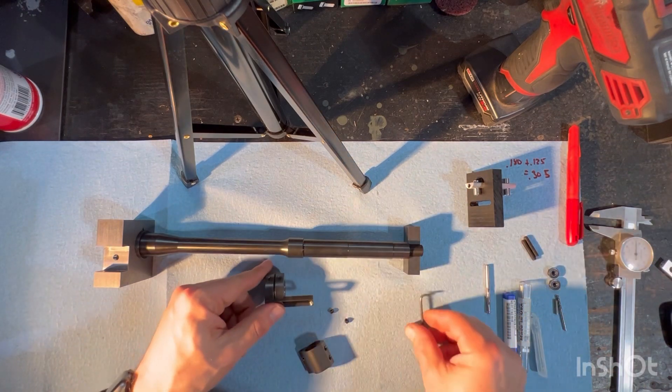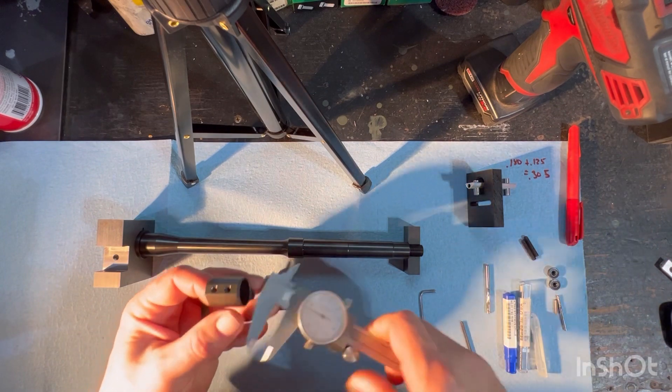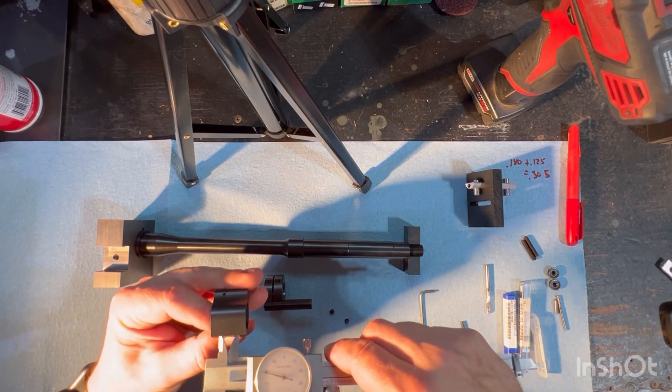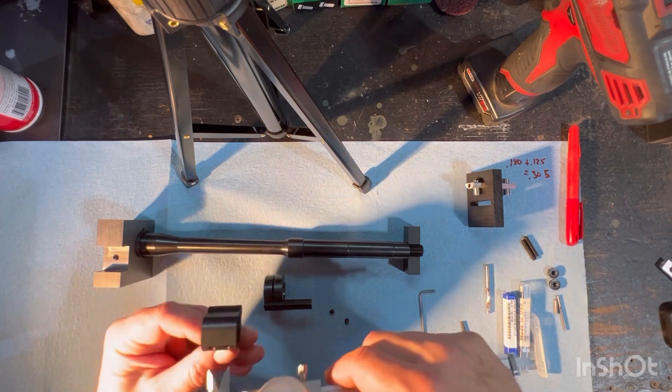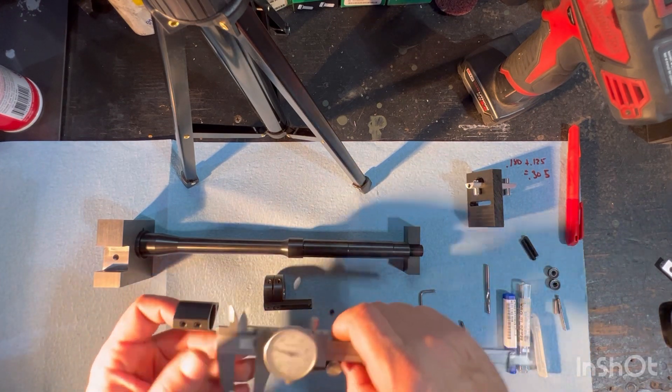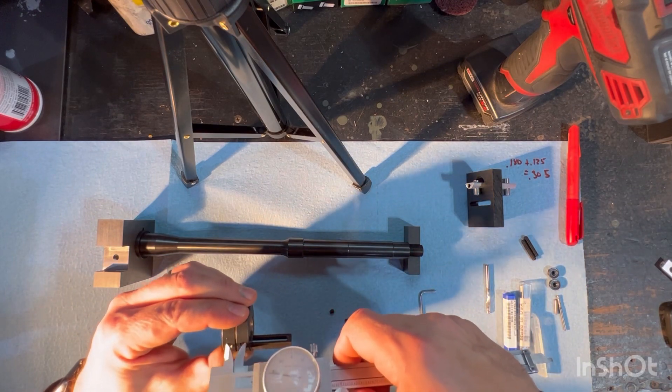So to set this, basically all you need to do is use the caliper with your gas block, get a rough dimension. Here we got 580 thousandths roughly. You can lock it up and we can come into this, get that roughly in place, snug it down.